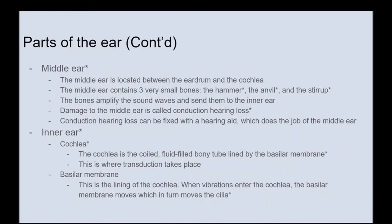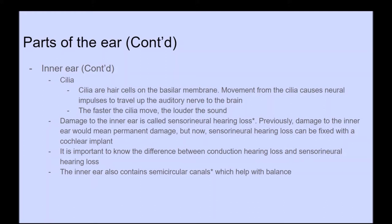In the inner ear, the cochlea is a coiled, fluid-filled, bony tube lined by the basilar membrane — this is where transduction takes place. The basilar membrane is the lining of the cochlea; when vibrations enter, the basilar membrane moves, which in turn moves the cilia — hair cells on the basilar membrane. Movement of the cilia causes neural impulses to travel up the auditory nerve to the brain; the faster the cilia move, the louder the sound. Damage to the inner ear is called sensorineural hearing loss, which can now be fixed with a cochlear implant. The inner ear also contains semicircular canals, which help with balance.